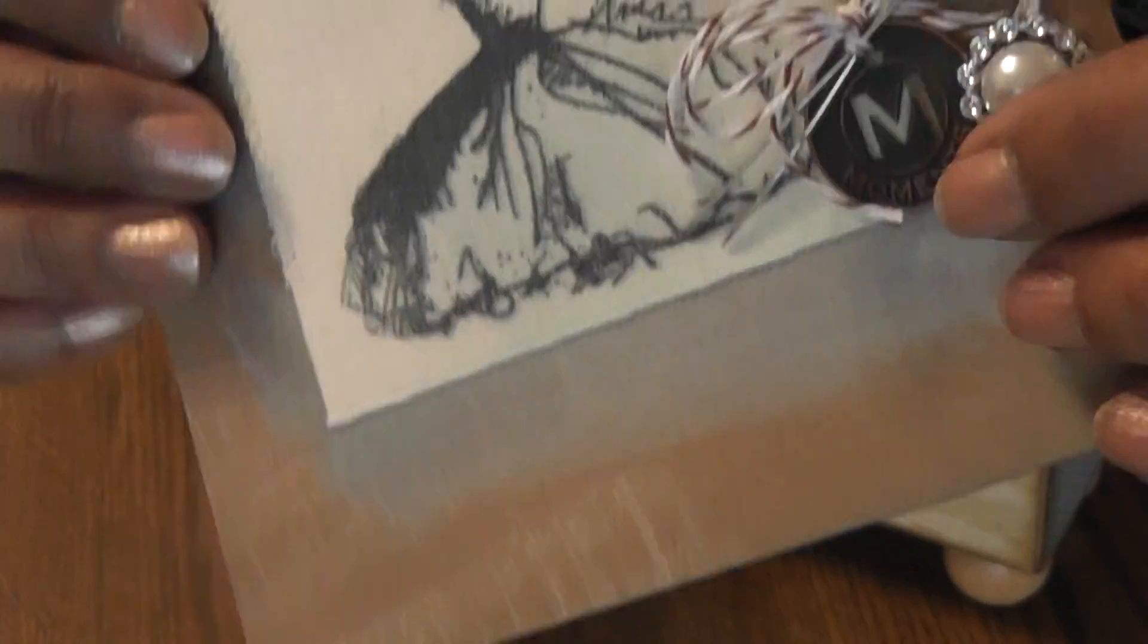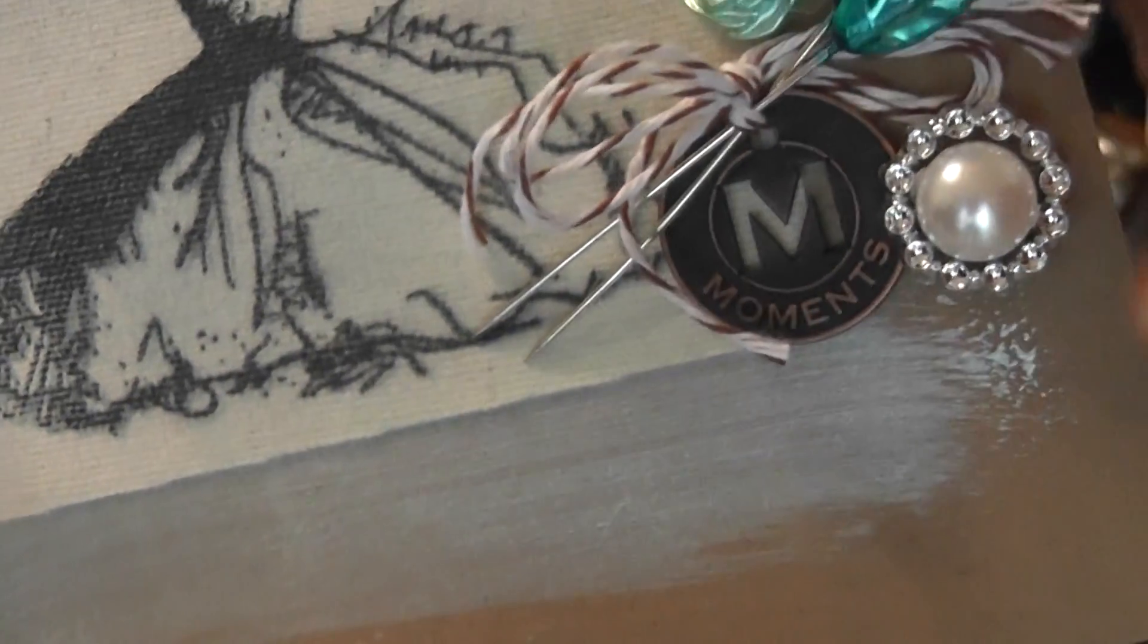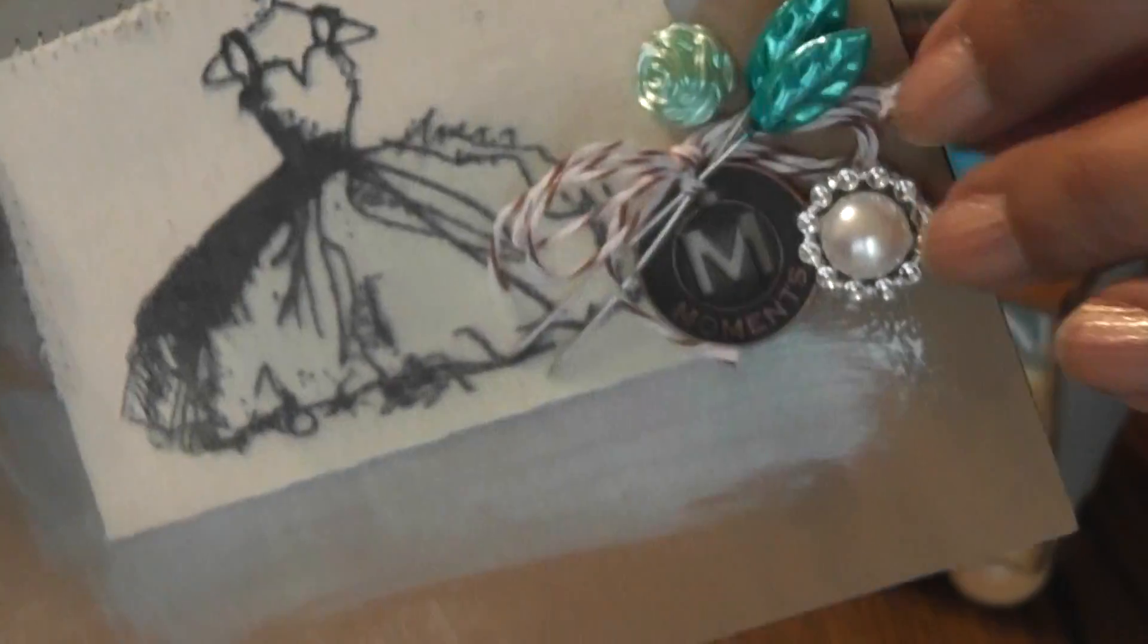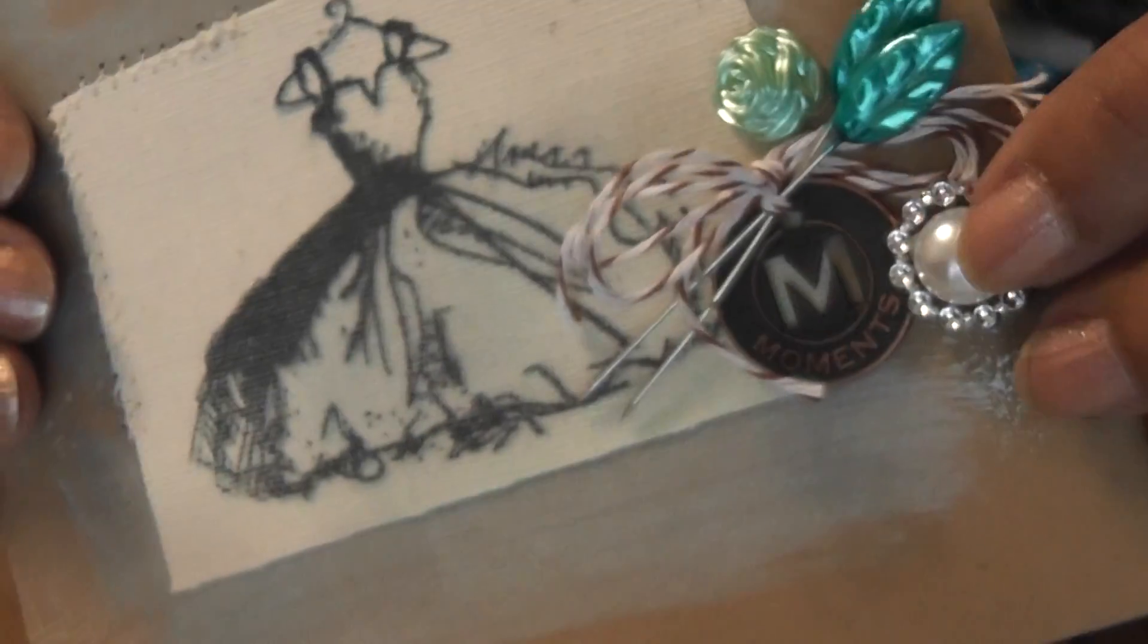And then over here, I added a Tim Holtz little token thing. I don't know what they call those. It says Moments. Ribbon Buckle and Flatback Pearl.